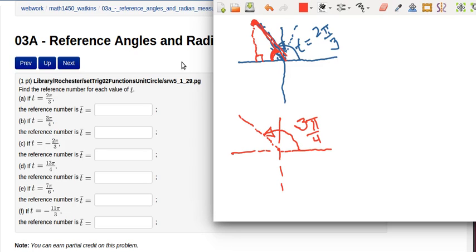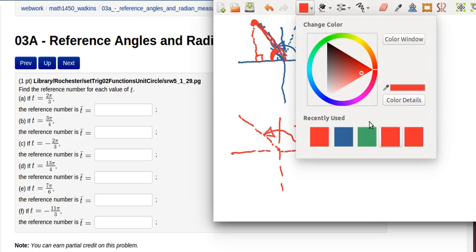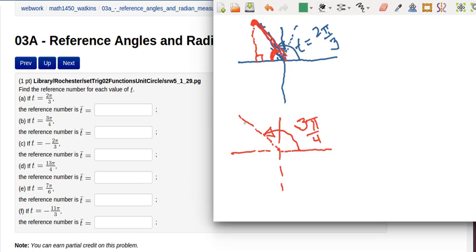The reference angle. Grab another color just for emphasis. The reference angle you pick any terminal point here drop a the reference angle is this one right here and that's going to be π over 4. Let's look at another one.